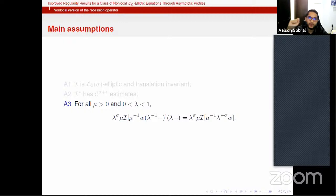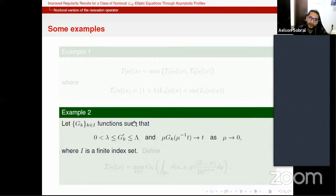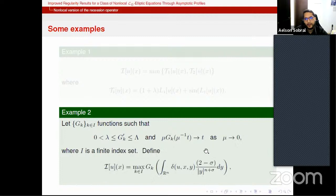The first example is the minimum of two operators, where this operator tau i here has this expression, where L i is a linear elliptic operator to the classical L2, so that the recession satisfies the Krylov-Safonov theorem from Caffarelli's recession. The second one, we take a finite family of functions gk satisfying this condition here, and here finite is just for simplicity. And we define this nonlocal operator here. It is a nonlocal operator to the class L0 such that the recession is the fractional Laplacian.